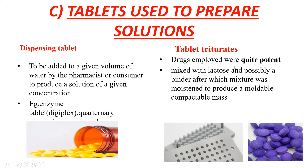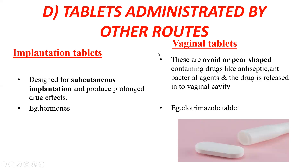Dispensing tablets use potent drugs mixed with lactose and a binder to form a compactable mass that is molded. Tablets administered by other routes include implantation tablets, placed subcutaneously for a prolonged drug effect — for example, hormones. Vaginal tablets are ovoid or pear-shaped, containing antiseptics and antibacterial agents released in the vaginal cavity.